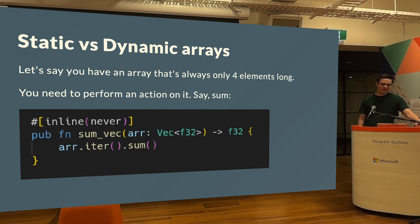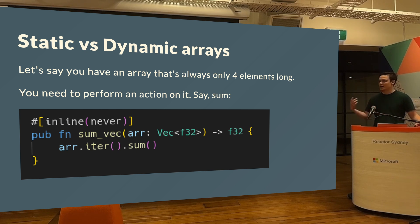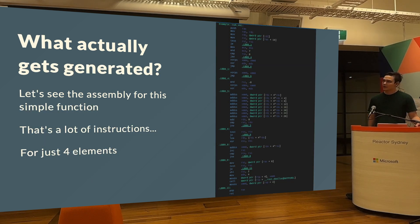Another example is static versus dynamic arrays. Dynamic arrays are great — the Vec struct is always the same size regardless of how you use it, the array can be resized, and there are many benefits to Vec. But what if you only ever need four elements? If we iterate and sum over a Vec, here is the assembly that gets generated — it's a very large assembly just to sum four numbers. There are SIMD optimizations that Rust inserts, which is very handy for variable-length arrays.